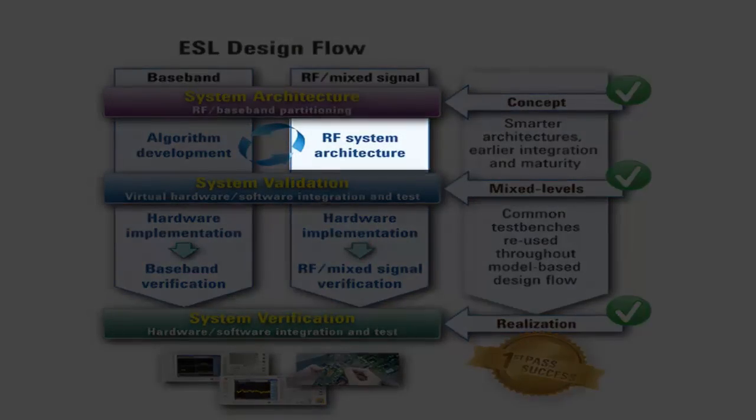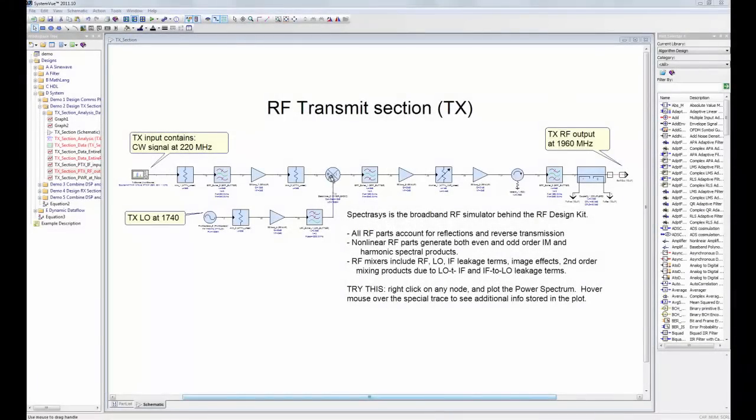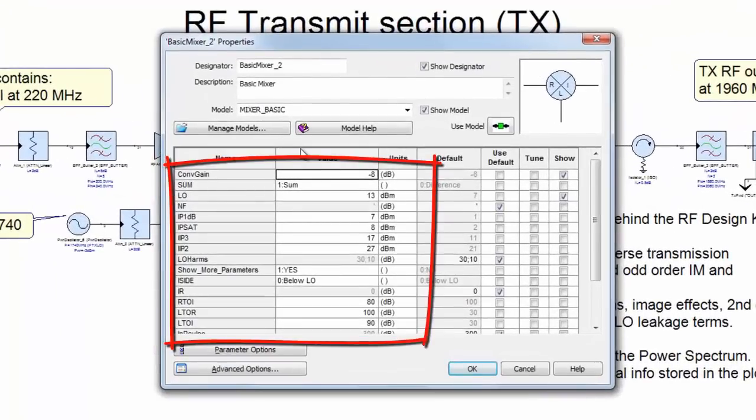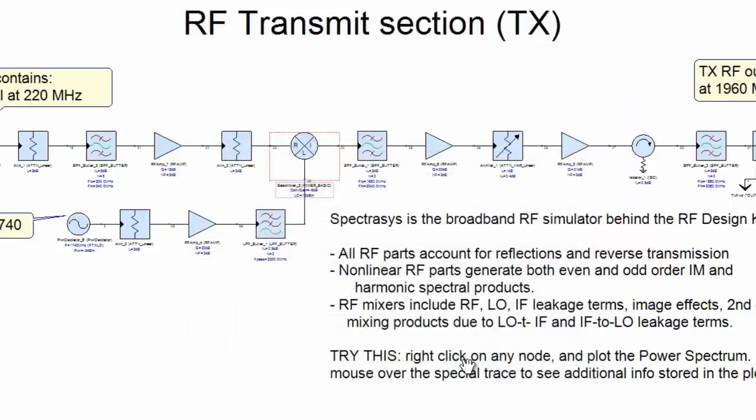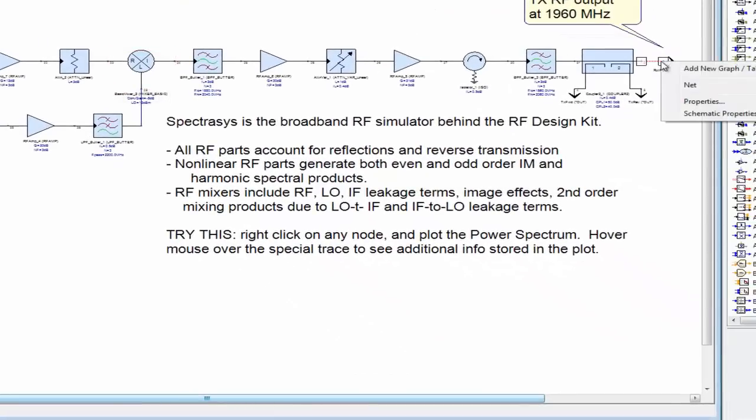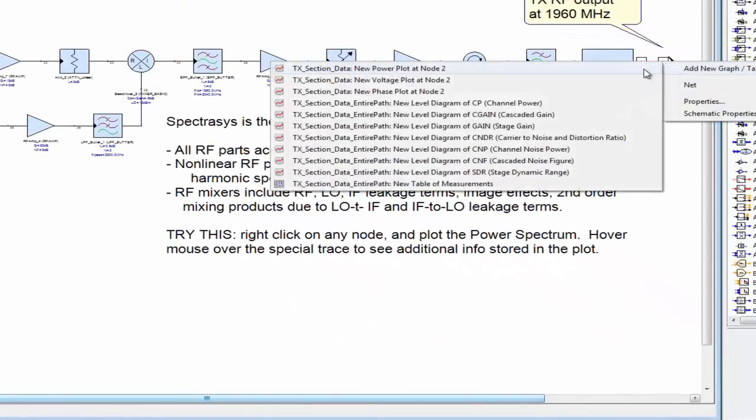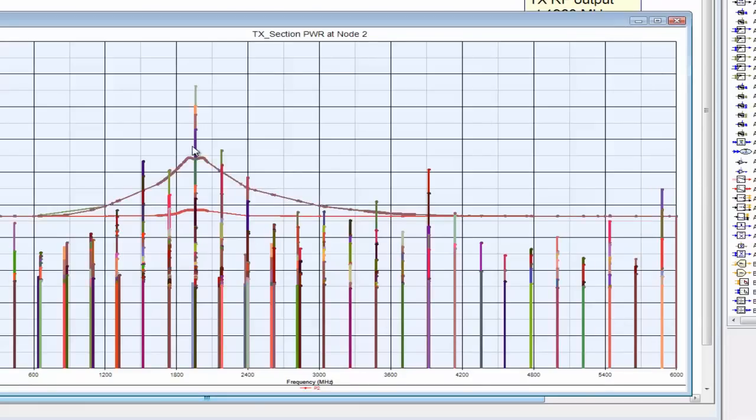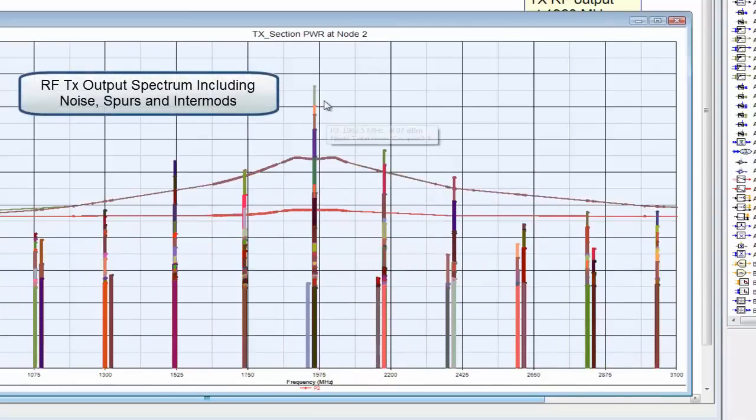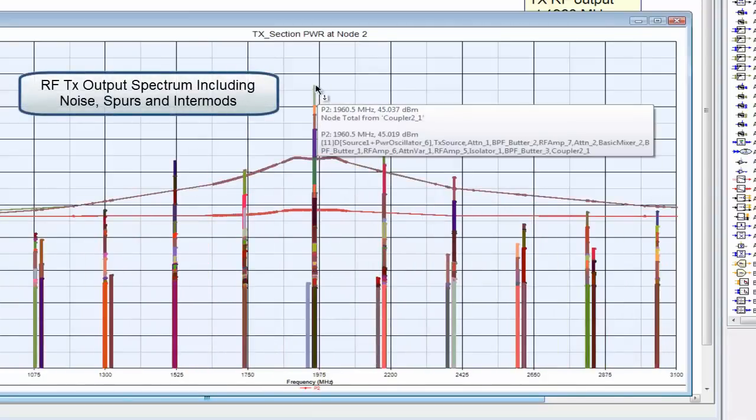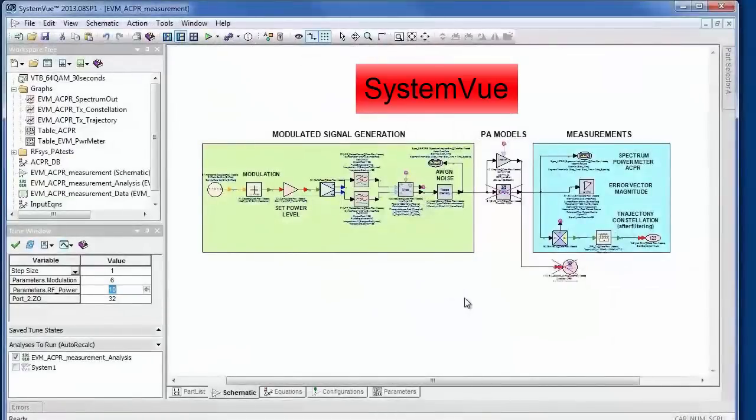Now let's look at RF system architecture. The Spectrasys simulation engine is used to explore RF system architectures, accounting for important RF effects such as mismatch, isolation, and nonlinearities. Spectrasys captures DC-to-daylight spurs and noise at every node, going beyond budget tools and spreadsheets. This helps validate RF architectures early while they are still inexpensive to change. Later in the design process,